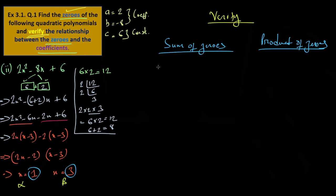Sum of zeros — we want to verify. The sum of the two zeros equals minus b by a, using the coefficients. Product of zeros — multiply the two zeros together — equals c by a.